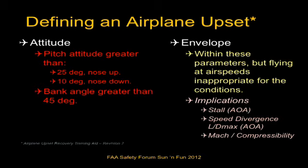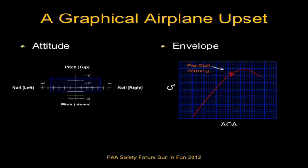Looking at these two statements graphically — pitch and bank — it's a tiny window of about 45 degrees of bank, 25 nose up, 10 degrees nose down. Within the envelope we have the normal lift curve. The X on the diagram is the indication that pilots are starting to get into trouble relative to the flight envelope, represented by a shake, a light, a horn, or whatever warning system the pilot has.